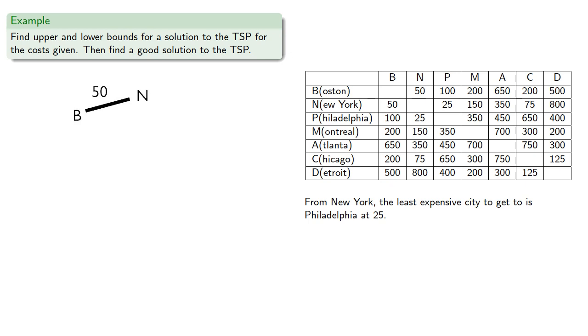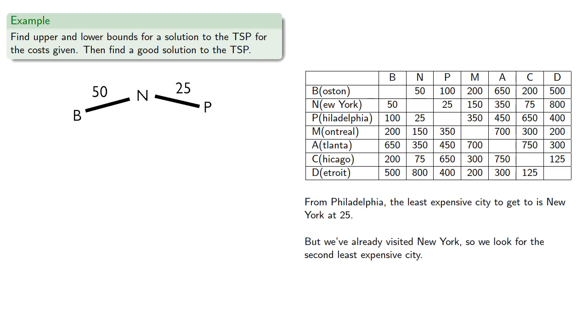From New York, the least expensive city to get to is Philadelphia at 25. From Philadelphia, the least expensive city to get to is New York at 25, but we've already visited New York, so we look for the second least expensive city, which is Boston, but we've already been there too, so we go to Montreal.